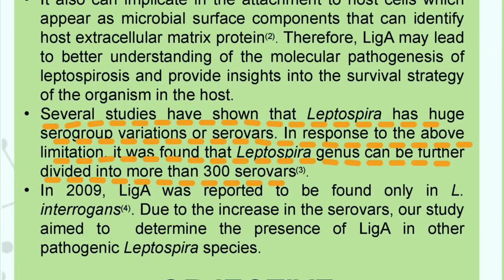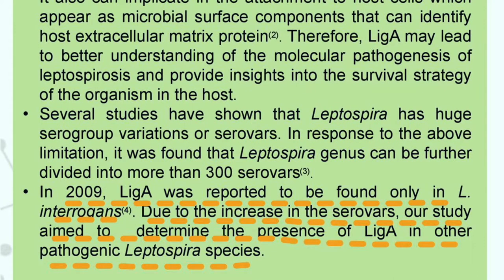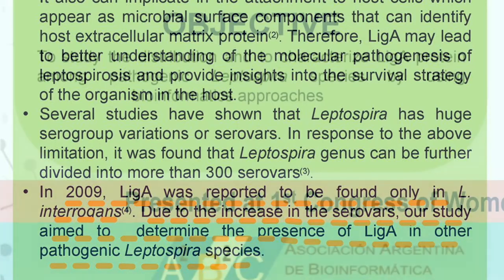Several studies have shown that Leptospirali has a huge number of serogroups or serovars. It was found that the Leptospira genus can be further divided into more than 300 serovars. In 2009, LiA was reported to be found only in Leptospira interrogans. Due to the increase in serovars, our study aimed to determine the presence of LiA in other pathogenic Leptospiral species.